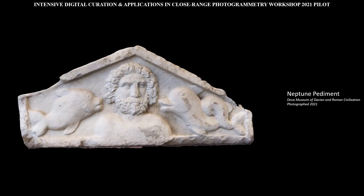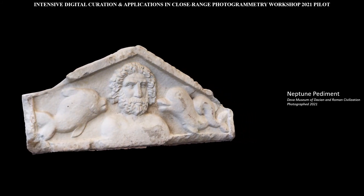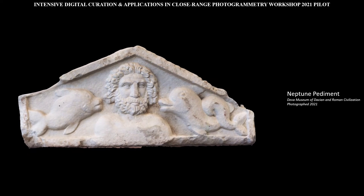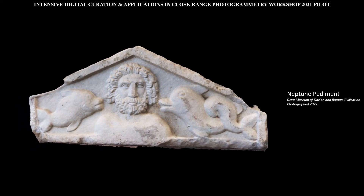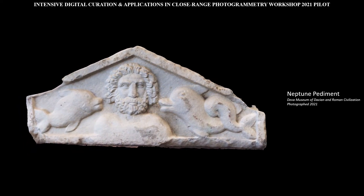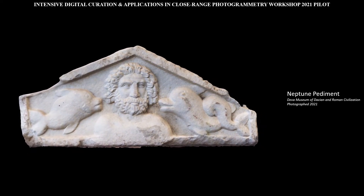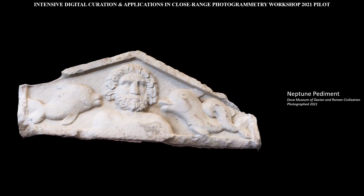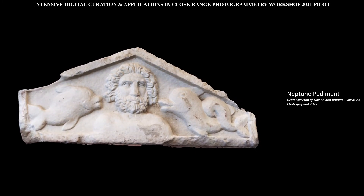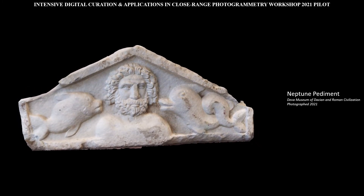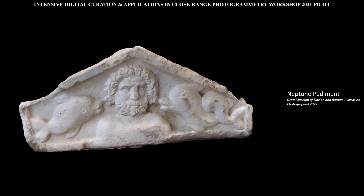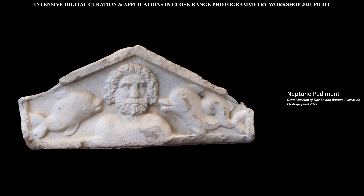This is a pediment depicting Neptune flanked by fish. In Roman mythology, Neptune was the god of the sea, whose ancient Greek counterpart was Poseidon. The differences in the depictions of the fish may be meant to represent the different natures of Salachia and Vanillia, who represent calm seas and turbulent seas, respectively.